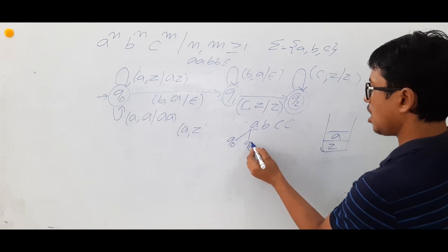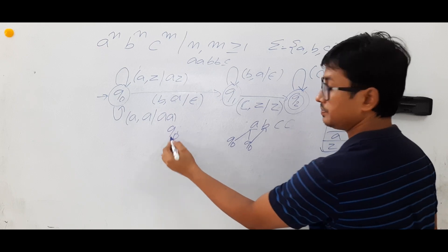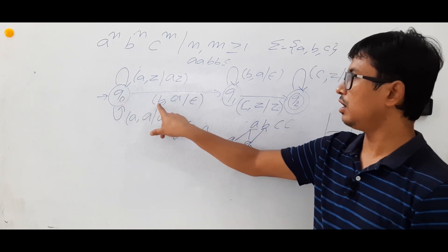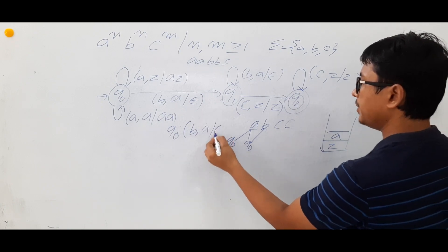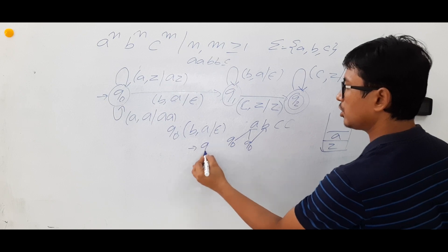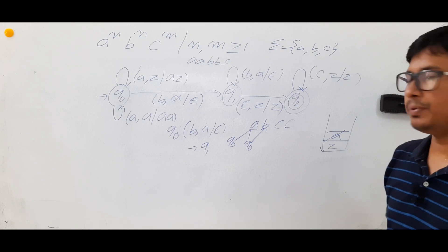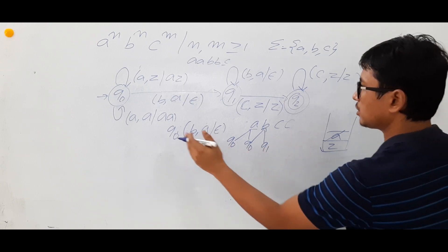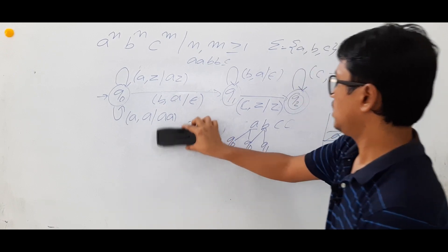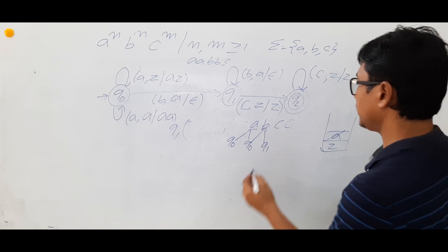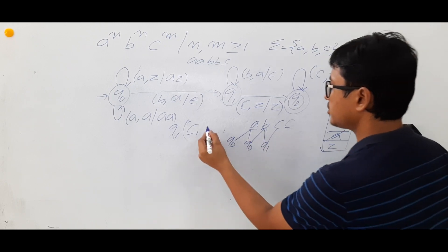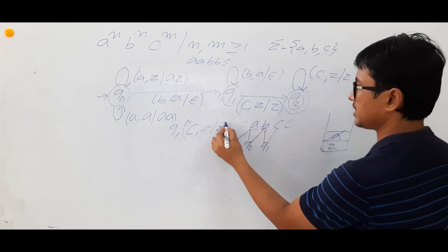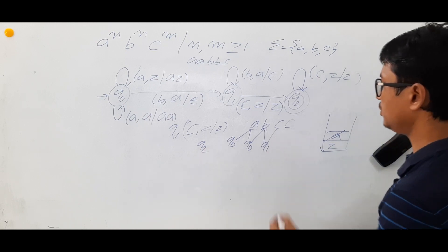Now in state q0, I see input 'b' and stack top is 'a'. I pop the 'a' — making the stack empty of a's — and go to state q1. Now in state q1, I see input 'c' and the stack symbol is Z. There is a transition from q1 on c with Z: keep Z unchanged and go to state q2.